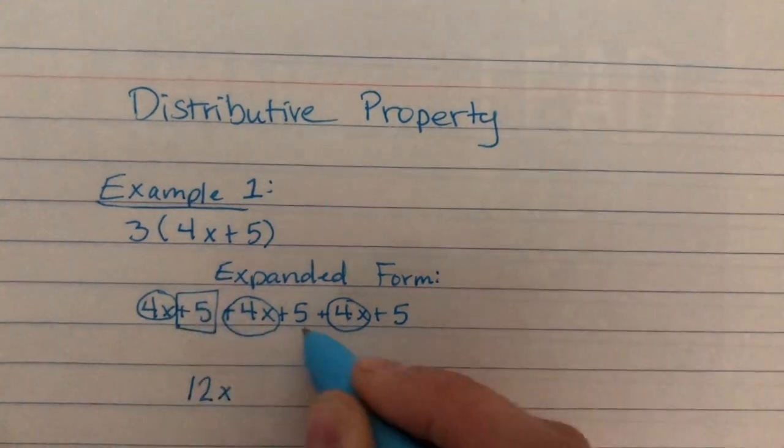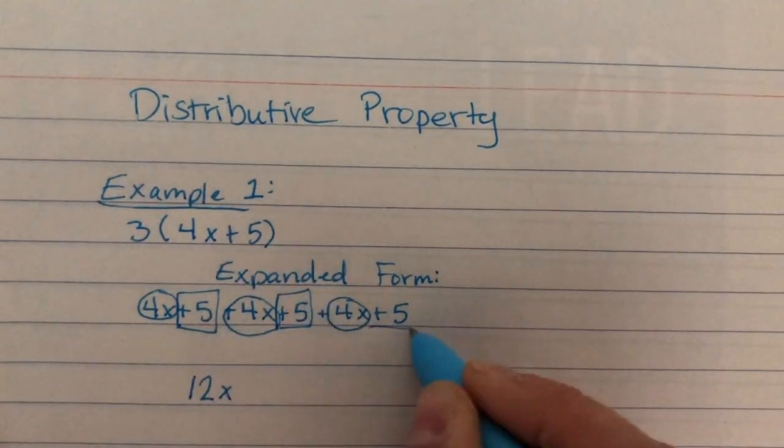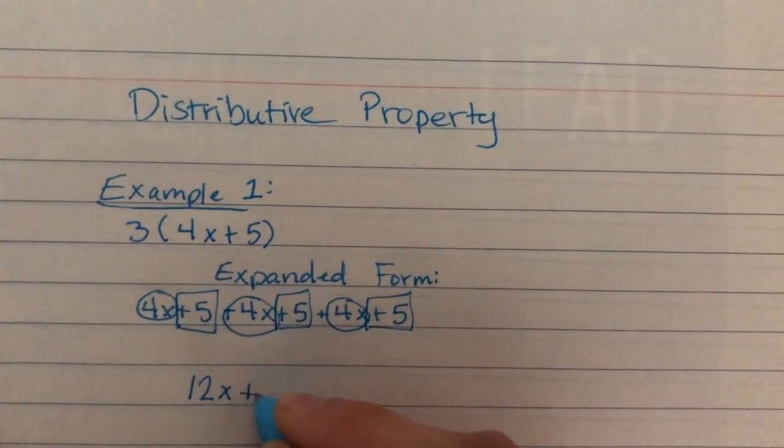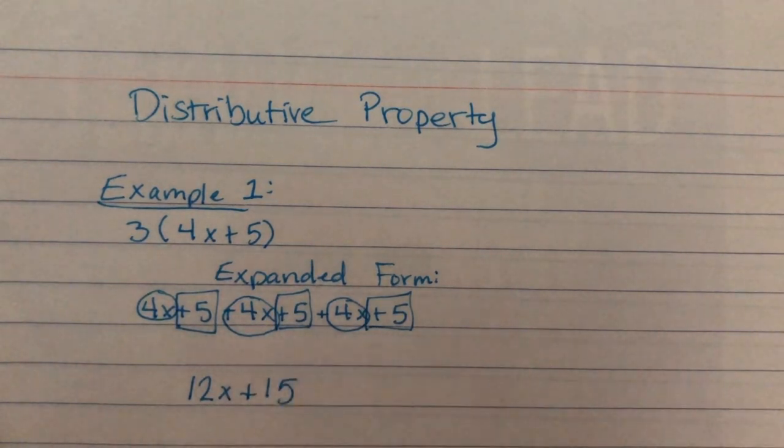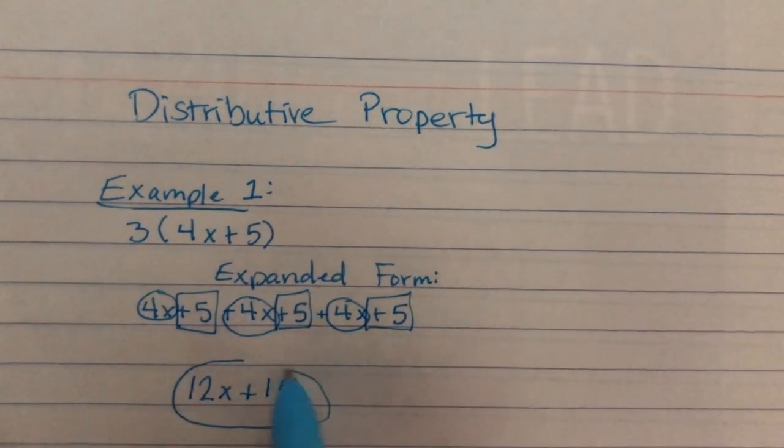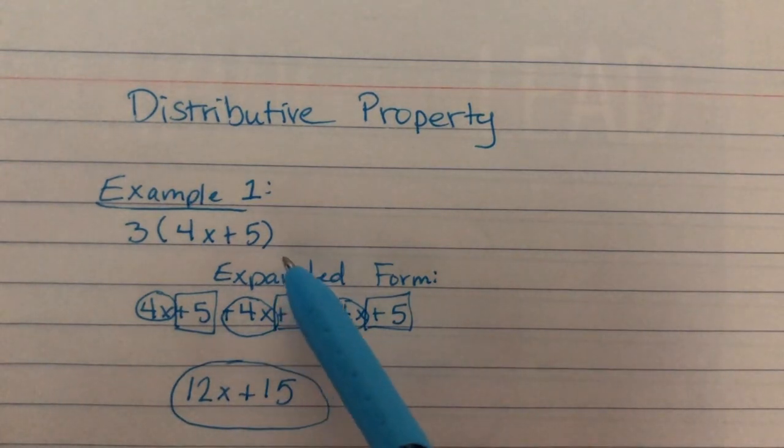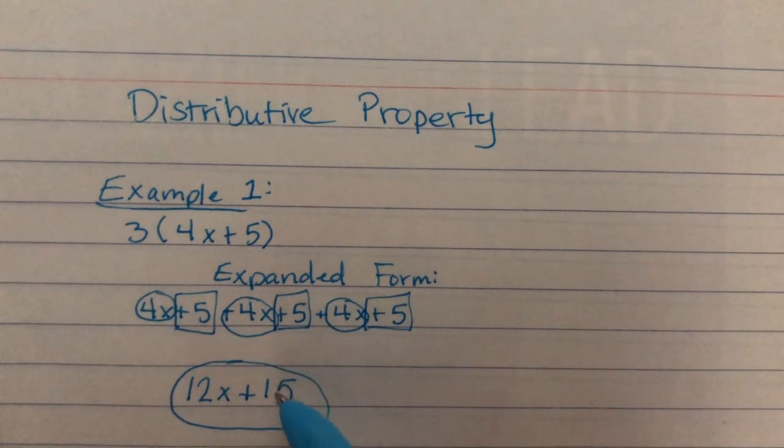And then I have a 5, a 5, and a 5, which makes a positive 15. Now, this is actually the simplified version of our starting expression. We did that by writing it in expanded form and then combining our like terms.